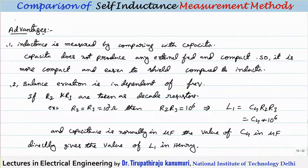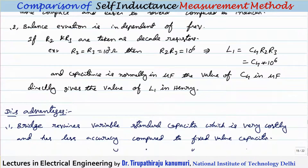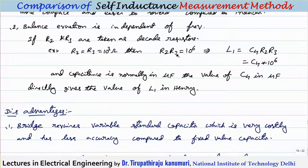The advantage of this method is that inductance is measured by comparing with a capacitor, which does not produce any external field and is compact — making it easier to shield compared to an inductor. Also, the balance equation is independent of frequency. If R2 and R3 are taken as decade resistors equal to, say, 10³ ohms, then R2 × R3 = 10⁶.